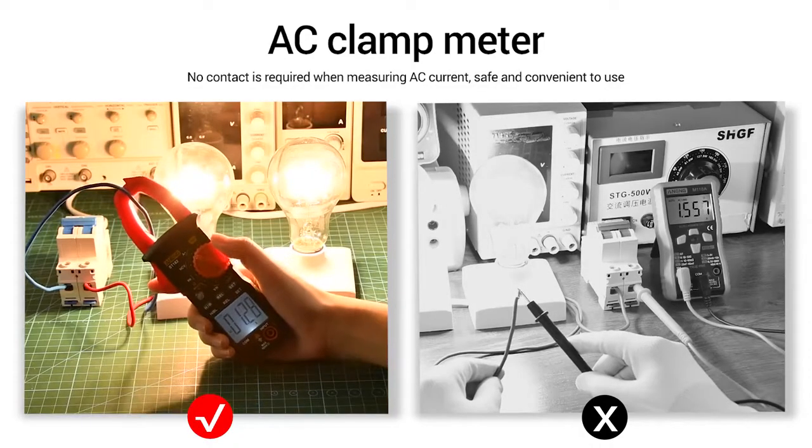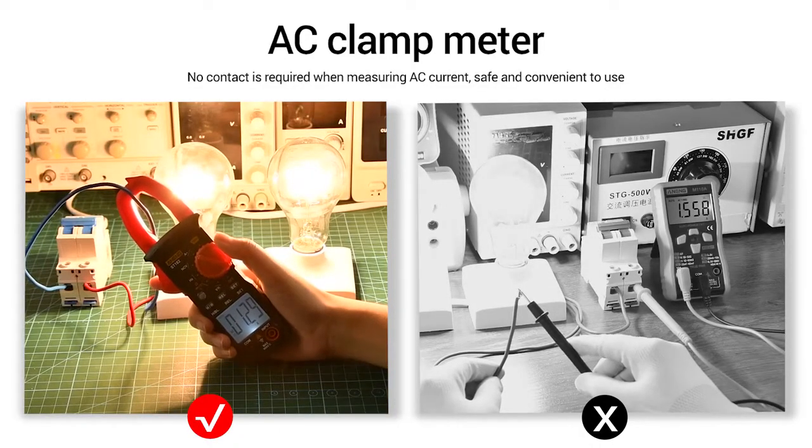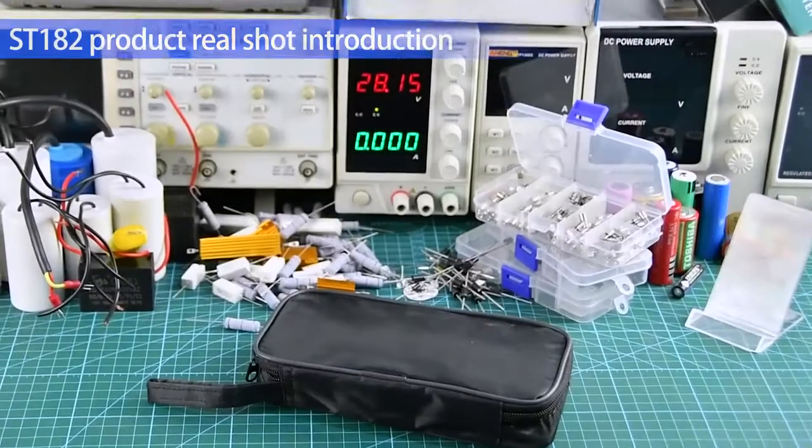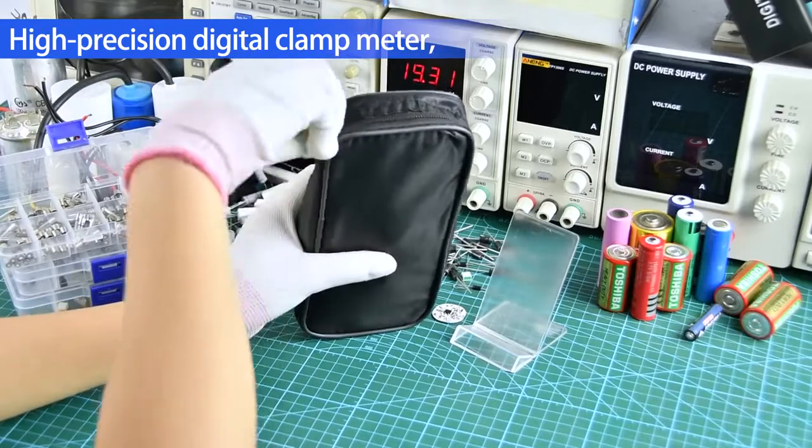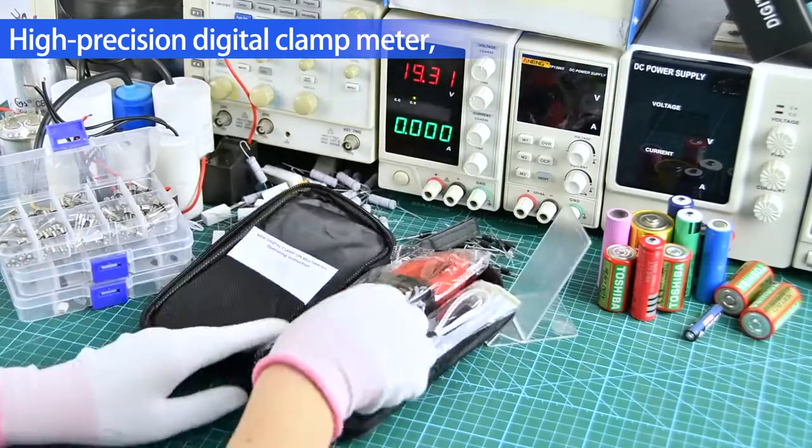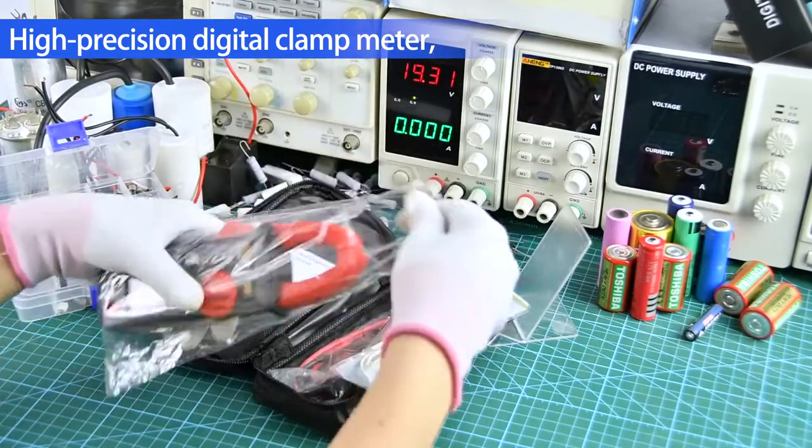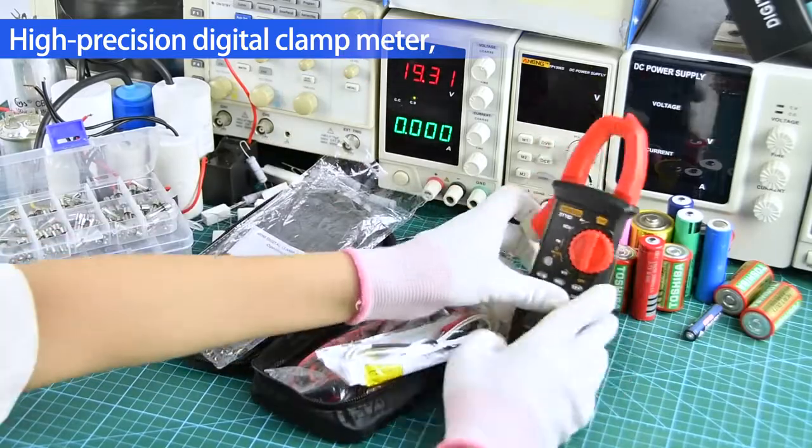The clamp meter does not need to touch when measuring AC current. Product real shot introduction. High precision digital clamp meter with storage bag, meter pair, manual, and other accessories.